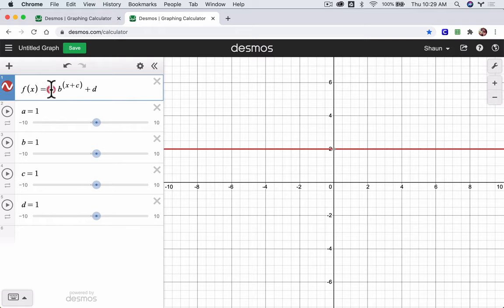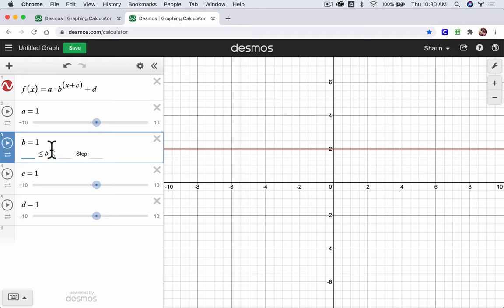For a, I'm going to ask you to restrict it. It's already from negative 10 to positive 10. That's okay. Click on that. And let's go by halves. We don't need more detail than that. For b, though, we're going to avoid negative values. I don't want to ask you to think about that. But we're going to stick from 1 to 10. And we'll do a step value again of 0.5. Keep it simple.